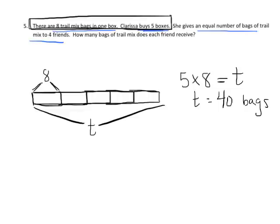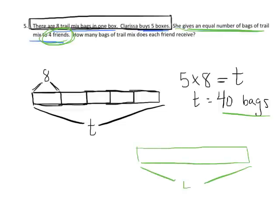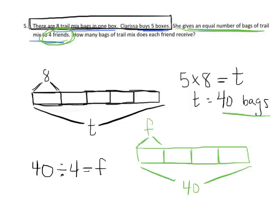The second question says: she gives an equal number of bags to her four friends. So we're going to take these 40 bags — there's my total, 40 bags — and share it with her four friends, which means I'm going to cut it up into four equal-sized groups. The question is how many does each person get, so I'm going to put F for friend. This problem is going to be 40 ÷ 4 = F. I'll think of it as: 4 times what gives me 40? F is going to equal 10. So each friend gets 10 bags of trail mix.